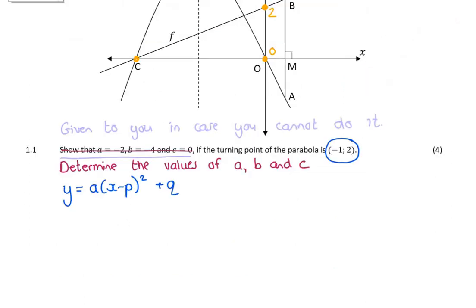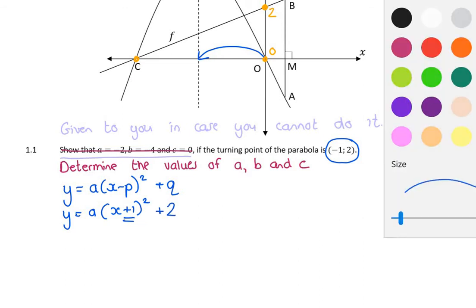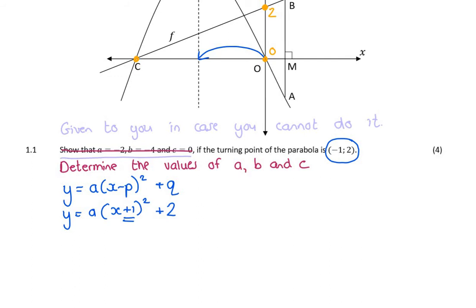So I've gone ahead and written down my turning point formula, and the most important thing to realize is which way did you move, left or right? Now if you've moved to negative 1, you've clearly moved the parabola to the left. So I moved one unit left, which means that inside my bracket is a plus 1. And then I moved two units up.